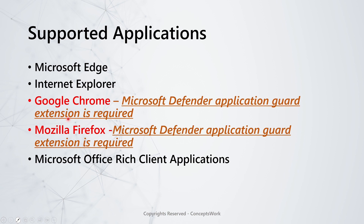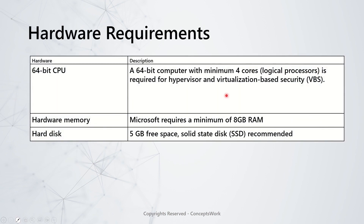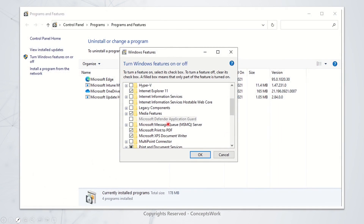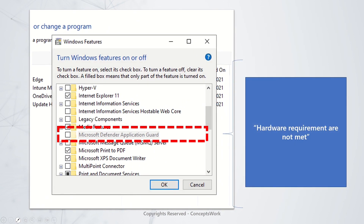From a hardware requirement perspective, a minimum of four cores are required — either in a virtualized environment or on the physical machine itself. From a memory perspective, 8 GB of RAM is required. There is also a specific mention of solid state disk, because if your machine does not have better compute power or a better hardware configuration, there will be performance issues. The enablement option inside 'Turn Windows features on or off' will be grayed out if your machine does not meet the hardware requirements of at least four cores and 8 GB of RAM.